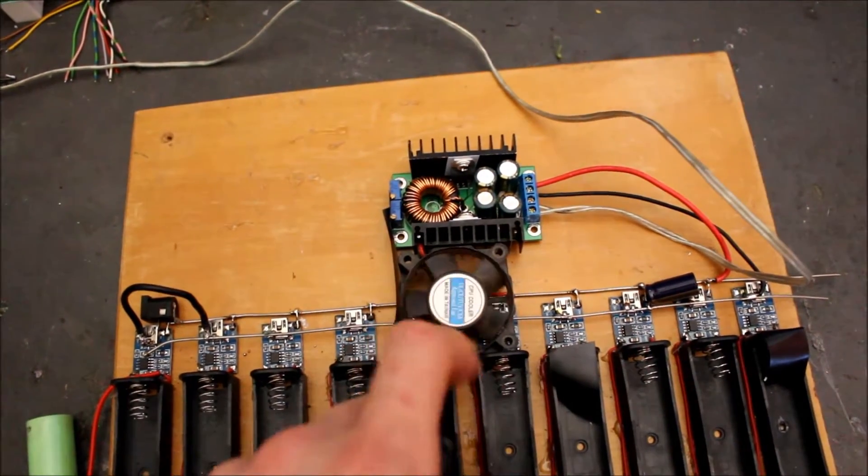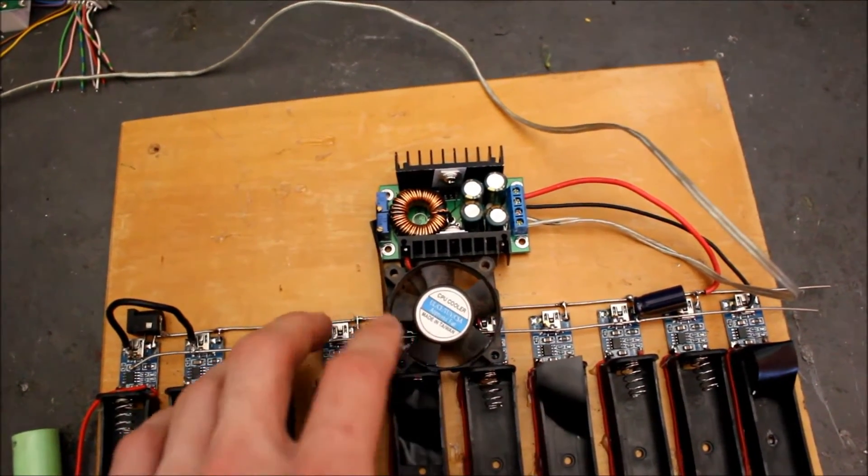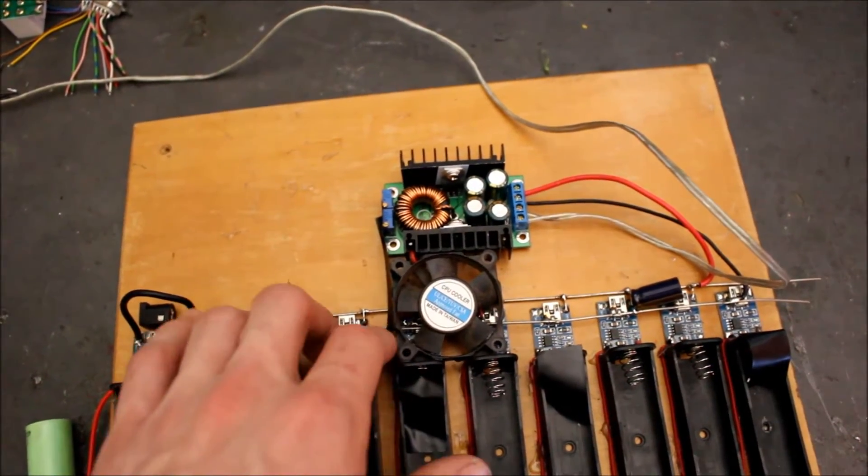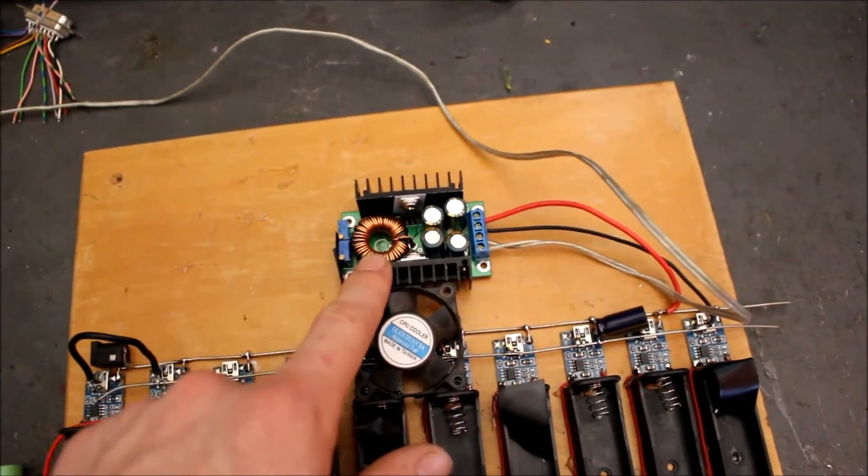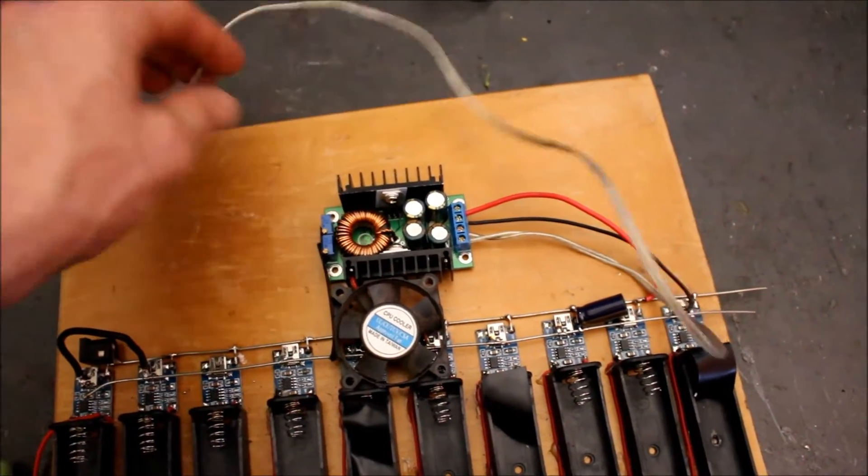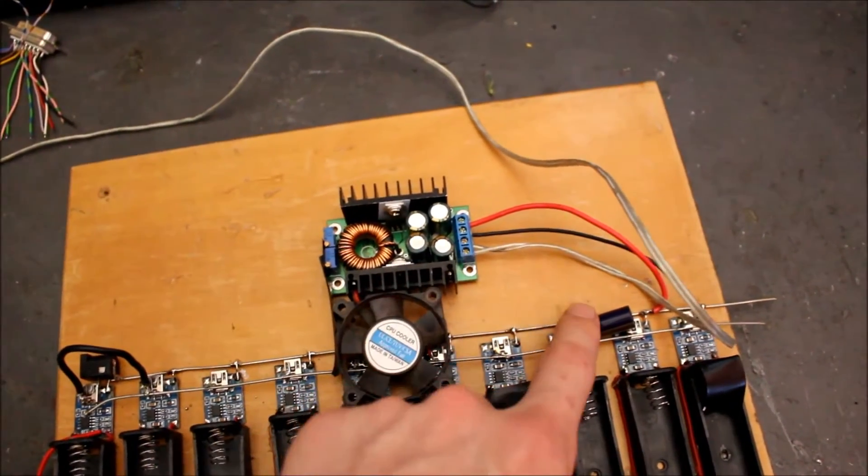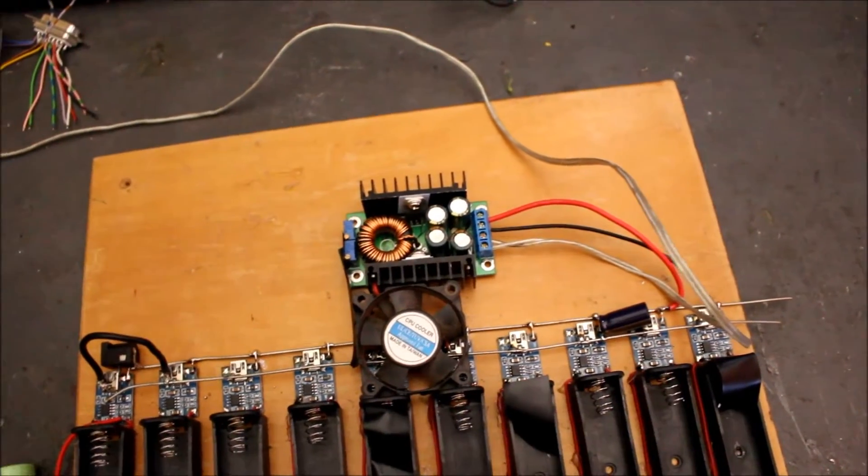A small fan that sort of helps provide some air flow across these because these can get quite warm, and a DC-DC converter which goes from my 12 volts down to 5 volts to run the circuit and a bit of a capacitor on there.